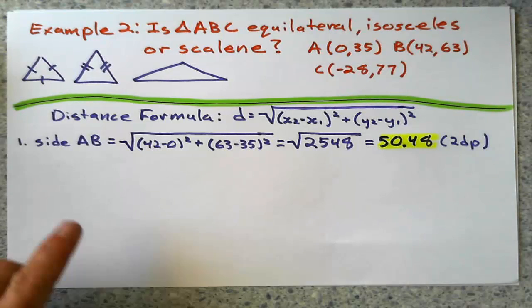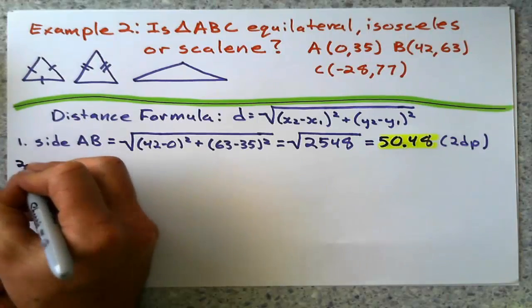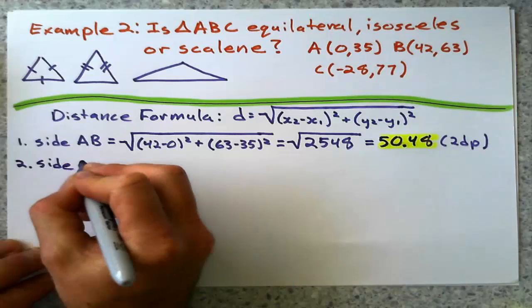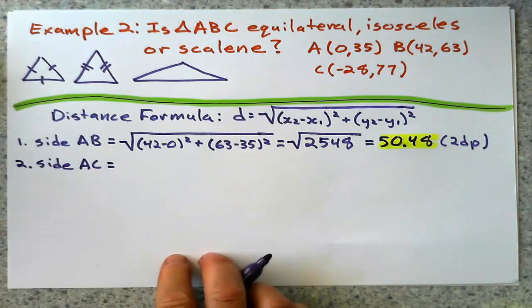And we just do that for the other two sides. But if we get a match next side, we don't have to do it for the third side. Oh, I guess we do this. See what kind of triangle it is. It could be equilateral. And we'll say side AC next.